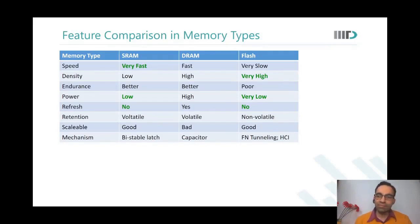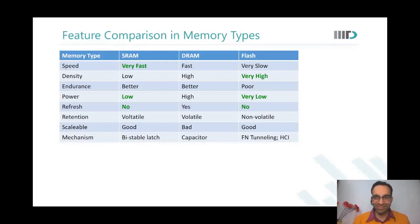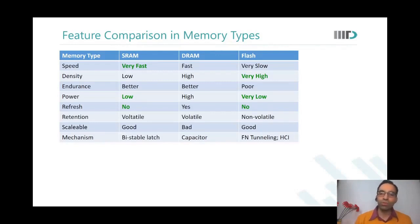A student asked: flash uses high voltages because of poor endurance, but you also said its power consumption is low — how? Because other schemes are used so that even in the presence of high voltage, the currents are kept low. Overall, many operations are done in parallel when you go to that high voltage, and therefore you still need less power overall. The flash implementation details will be covered later in the course.